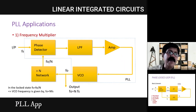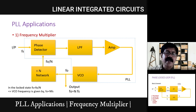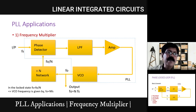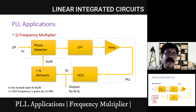Here comes the application of frequency multiplier using PLL. If you see this outer block, this is a PLL IC in which a phase detector, low-pass filter, error amplifier, and VCO are present. We know when lock is achieved both frequencies FS and FO become equal. Now if we want a frequency multiplier, a divide-by-N network is inserted between the phase detector and VCO. The output of the VCO — the voltage controlled oscillator — will be divided by this N.